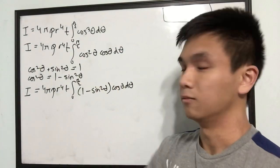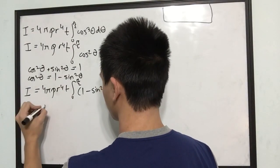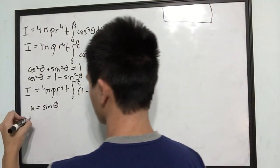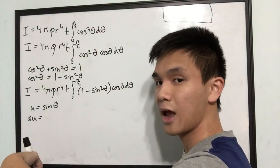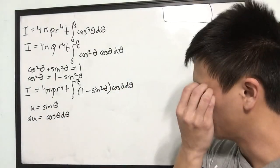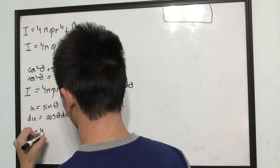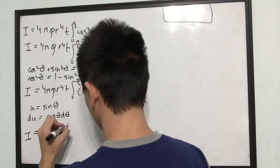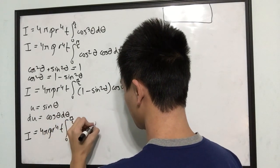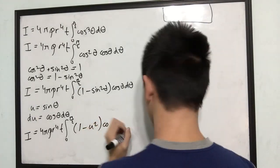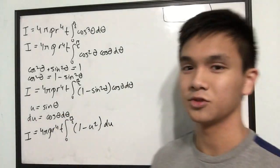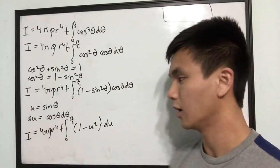Now, u-substitution: let u = sinθ. Differentiating, du = cosθ dθ. So we can plug everything in: the integral becomes ∫ (1 − u²) du.